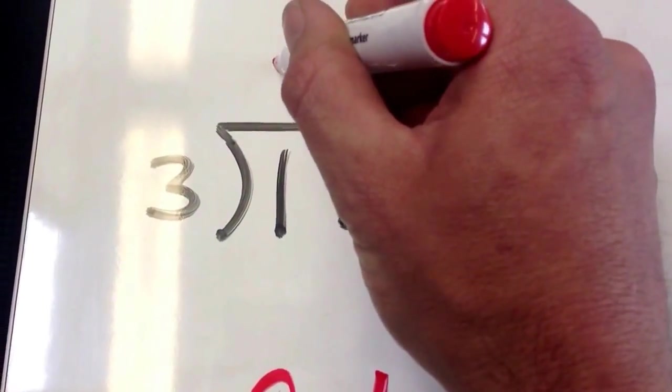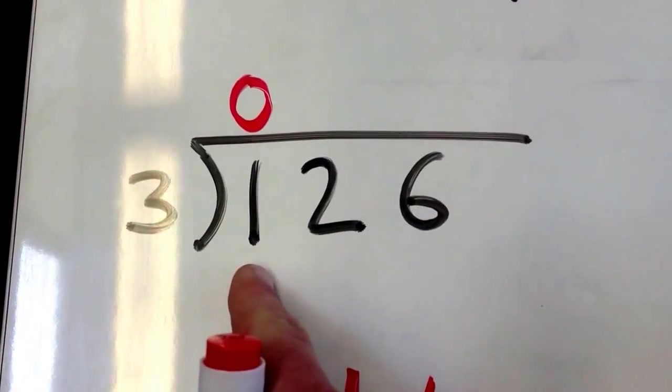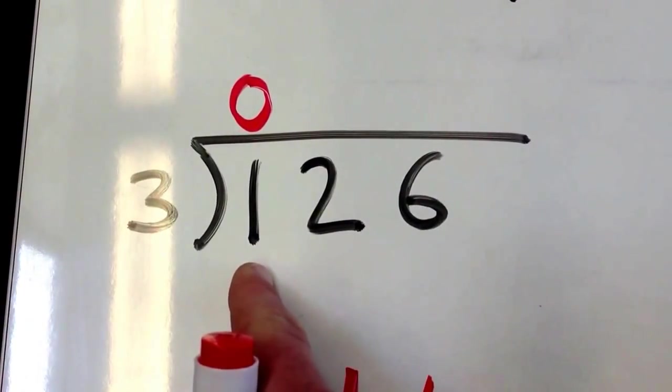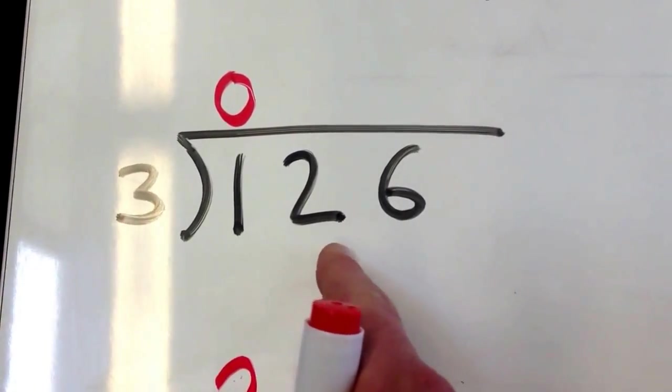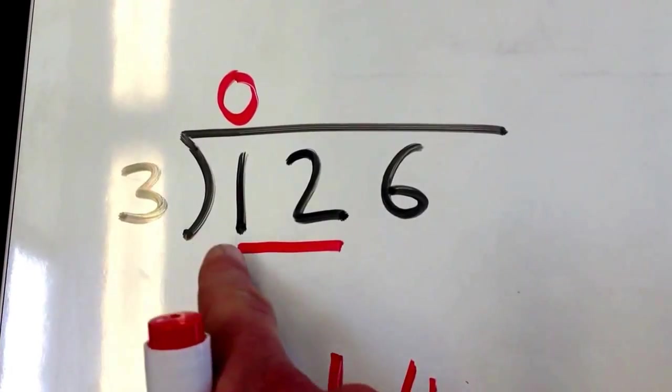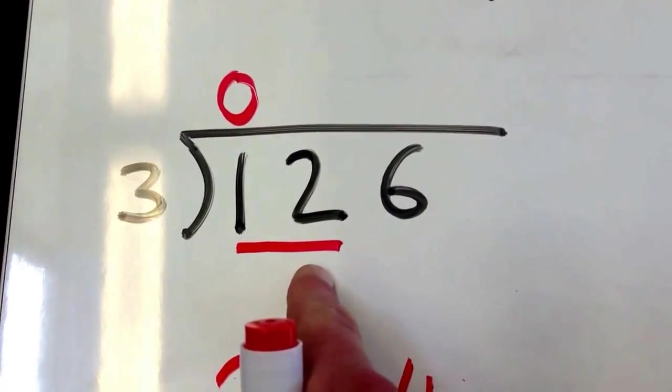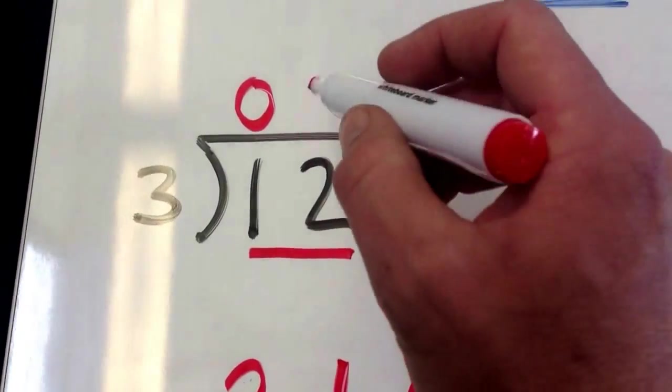So what we'll do is put a 0 up there. That shows we've dealt with the number 1. Now we look at the next number and join these two together, making 12. Now we say, how many times does 3 go into 12? Knowing your basic facts, you'll know that 3 goes into 12 four times.